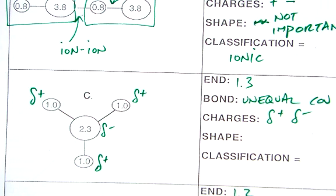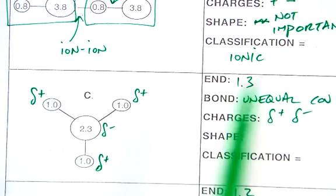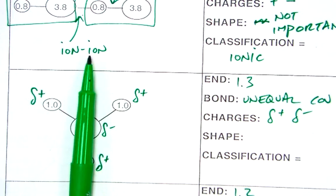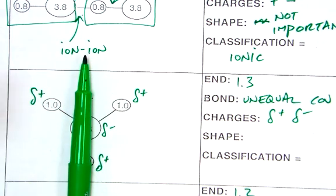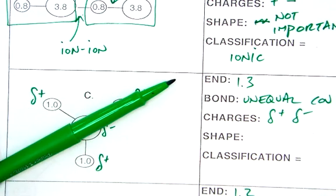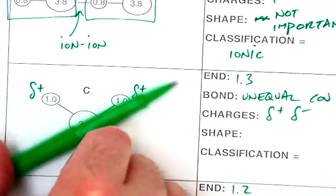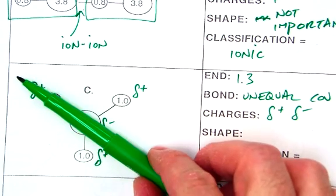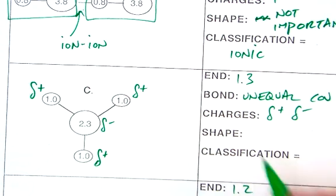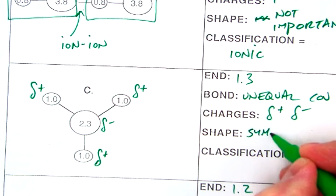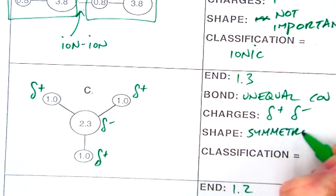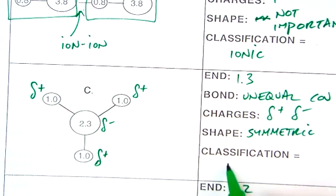Now, you actually have, in terms of the shape, this one's symmetric. You have a line of symmetry vertically and diagonally. It's a little bit tricky to see sometimes, but you have lines of symmetry everywhere. And so, this is going to be symmetric, and we're going to label this as being non-polar.